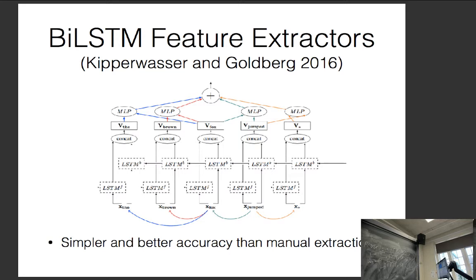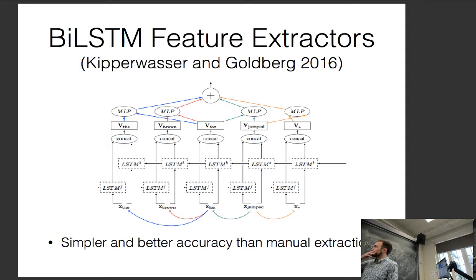The next model had a BiLSTM feature extractor, and calculated edge scores by taking the extracted BiLSTM features and comparing them using an MLP to calculate the scores. This was simpler and gave better accuracy than manually extracting features.